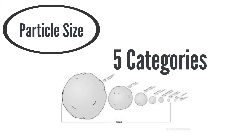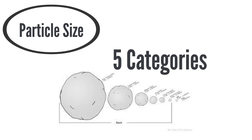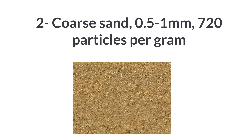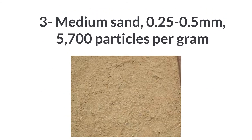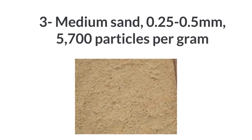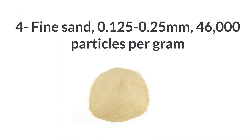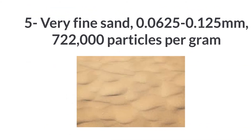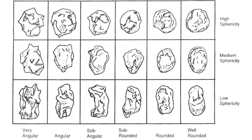There are many different particle sizes, broken down into five categories, with each category being half the size of the previous particle size. Fine, medium, and coarse are the most commonly used for turf grass. Very coarse sands are 1–2mm, coarse sands are 0.5–1mm, medium sands are 0.25–0.5mm, fine sands are 0.125–0.25mm, and very fine sands are 0.0625–0.125mm.